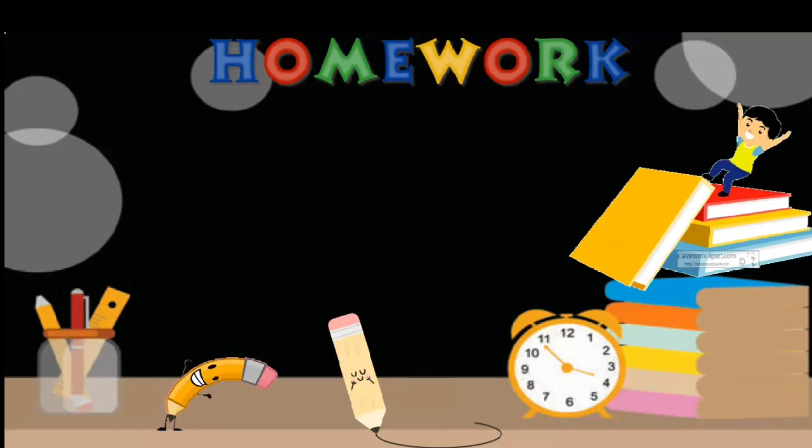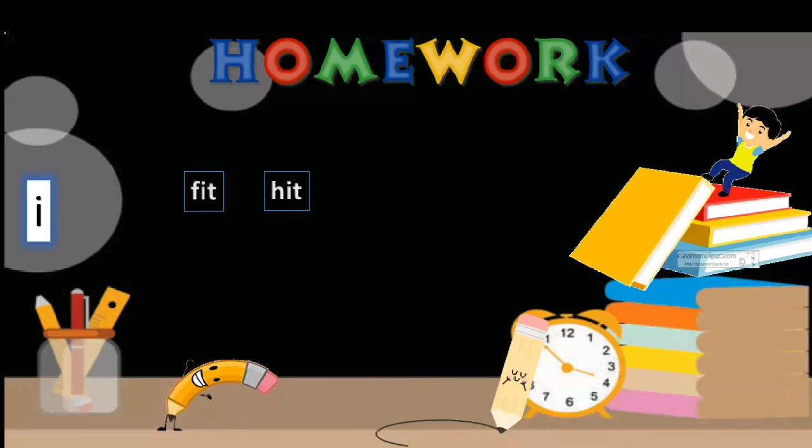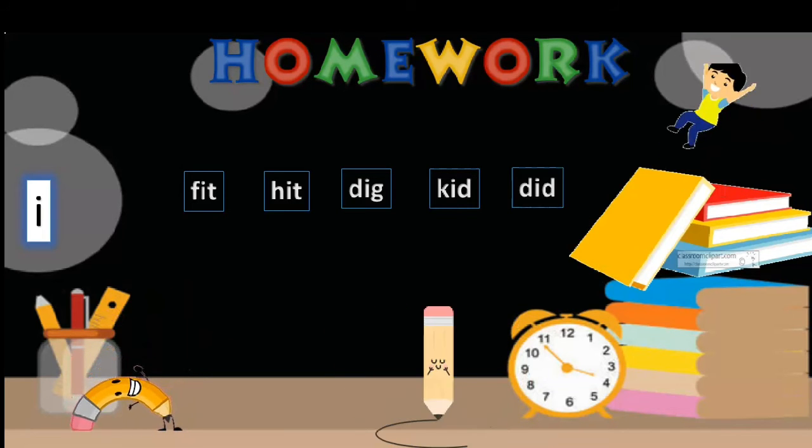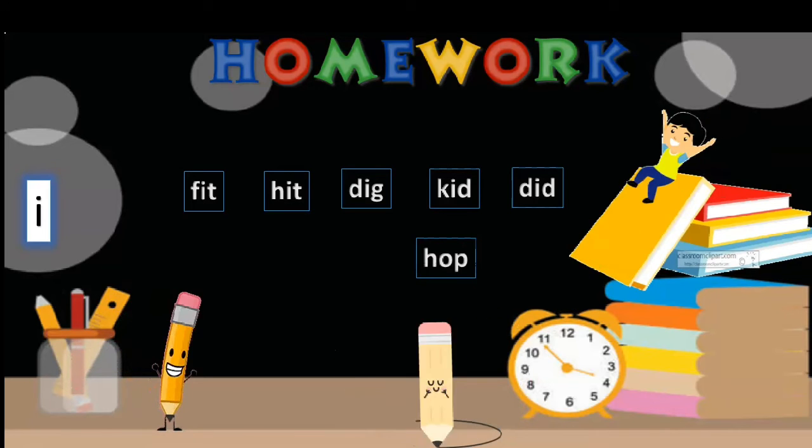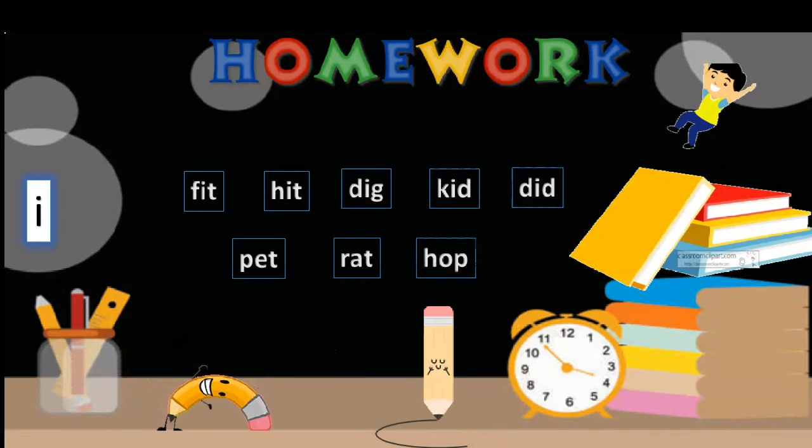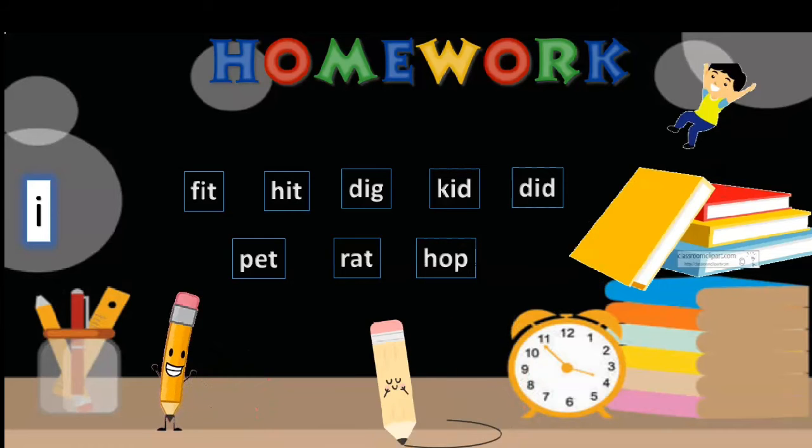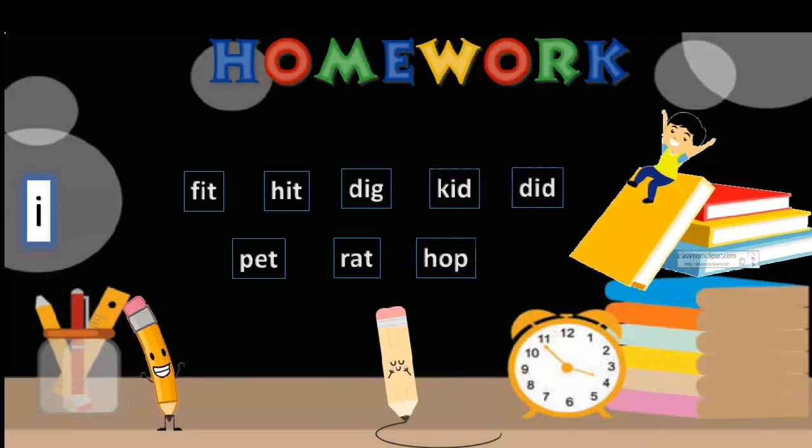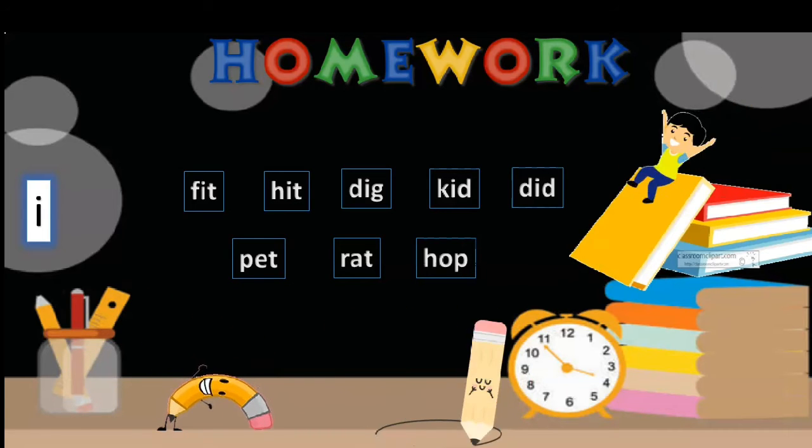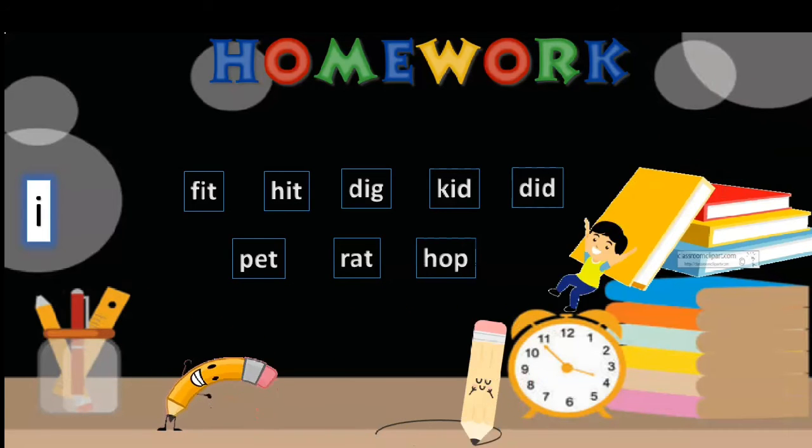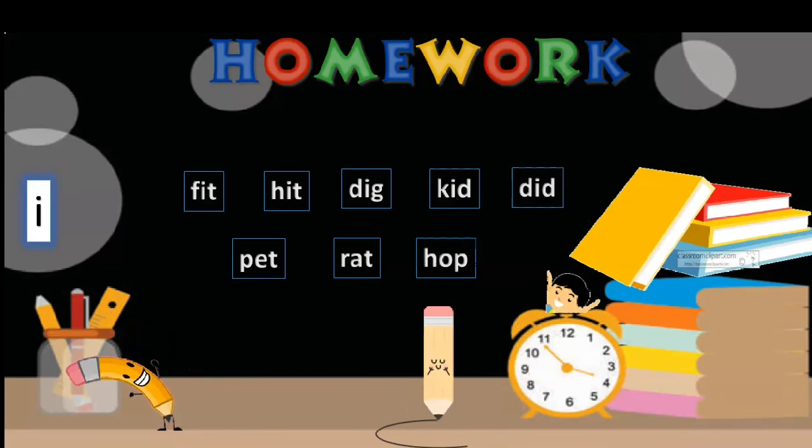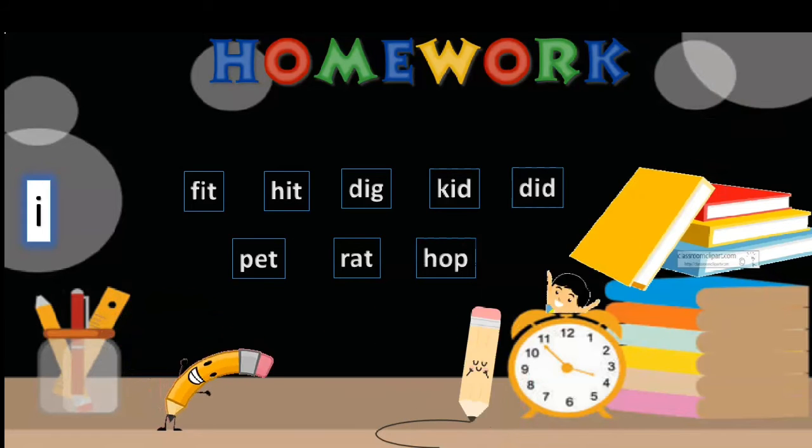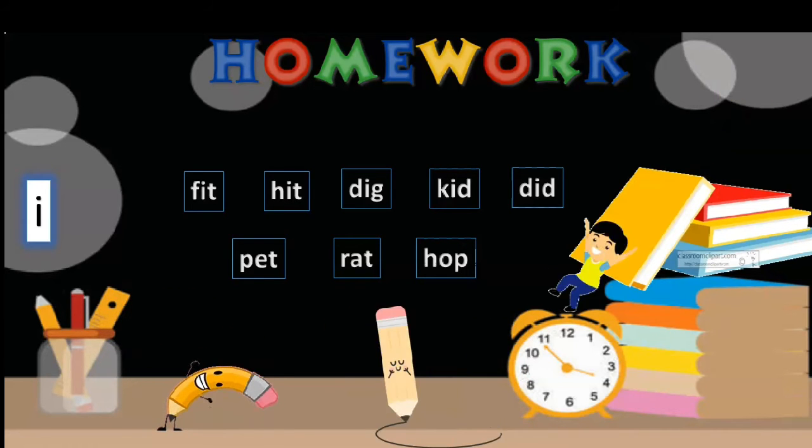Okay, now moving further, I. So F-I-T fit, H-I-T hit, D-I-G dig, K-I-D kid, D-I-D did, H-O-P hop, R-E-T rat, P-E-T pet. So now you have to find out which word belongs to the family of vowel I. Do you know which word will go? I know that you all have answered and you can send it. Yes? Okay. Do you know which word belongs to the family of vowel I? I will answer only first, I will tell you about it. You are very smart, you can do it.